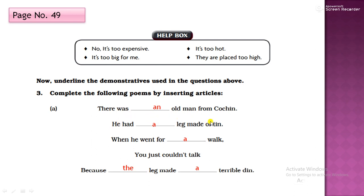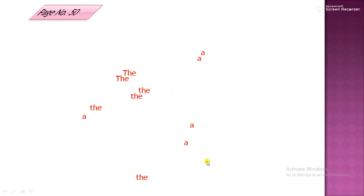So now I have to underline the demonstratives used in the questions below. Complete the following poems by inserting articles. Poems by inserting articles. So now we were to use articles again. There was an old man from coaching. It's very interesting, very easy. A-E-I-O-U. So O is there. And you know, O is a vowel. He had a leg made of tin. A leg. One leg. When he went for a walk. When he went for a walk. You just couldn't talk.